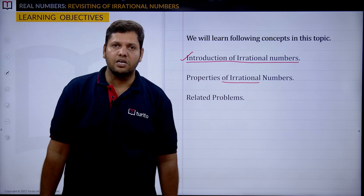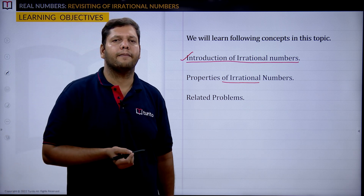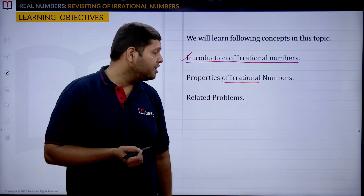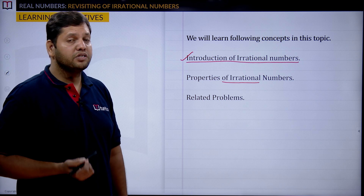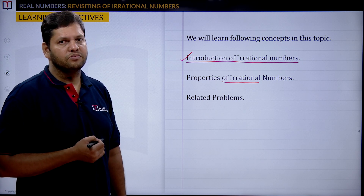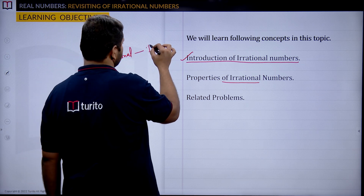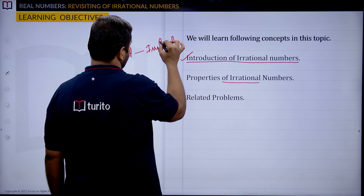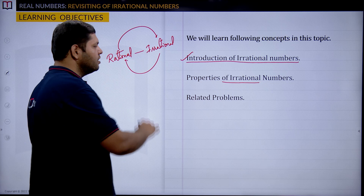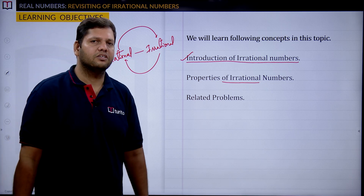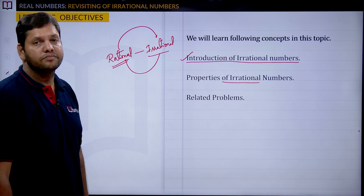Now, what is the irrational number? Tell me, what is the definition of irrational number? How can we define it? Rational and irrational are opposites. If you know the definition of rational number, then the opposite of that will be irrational number.